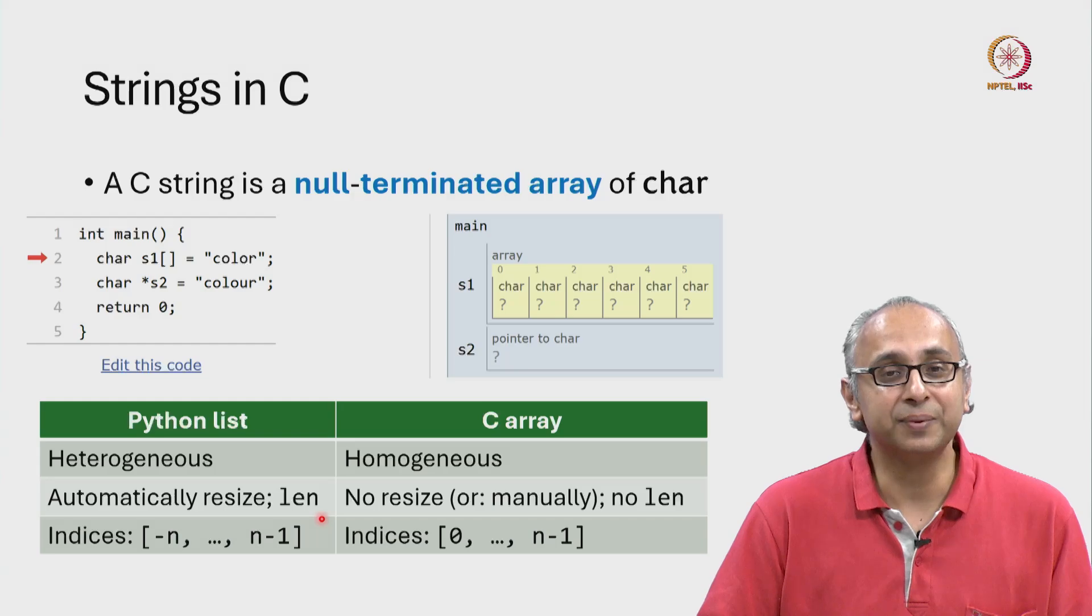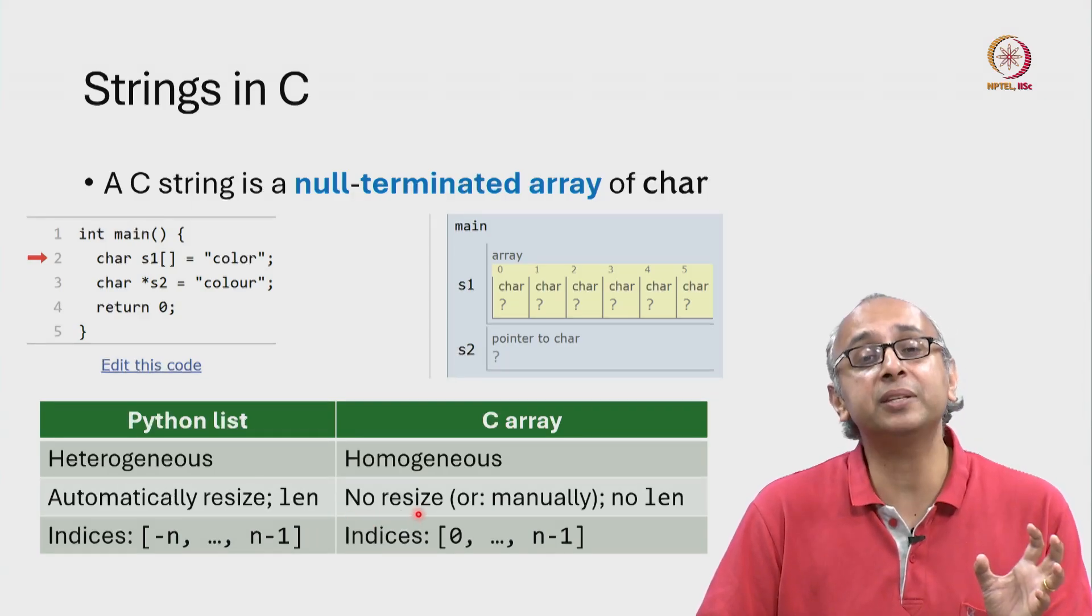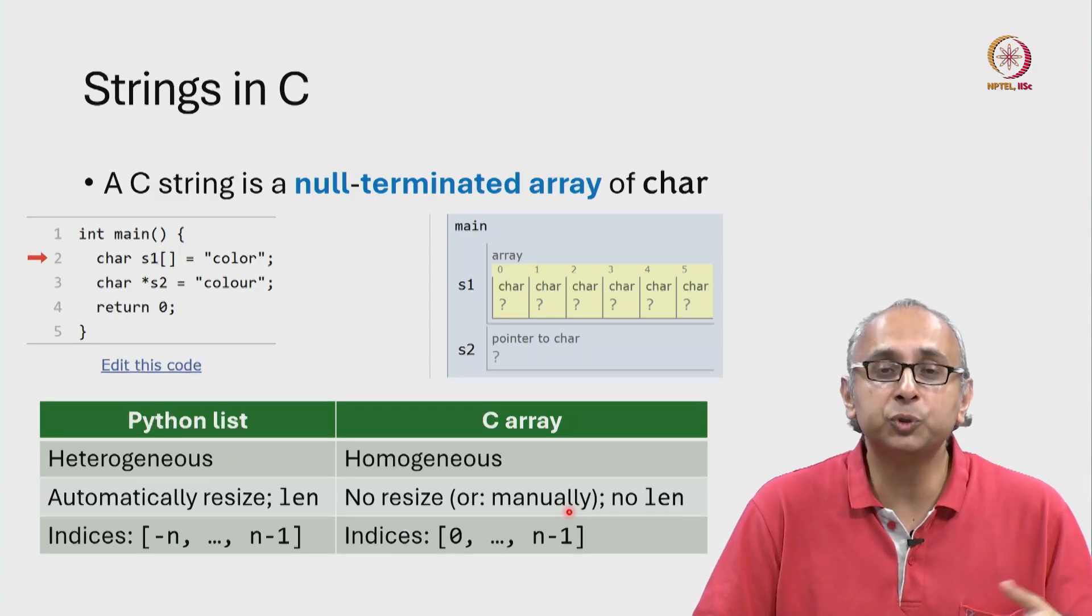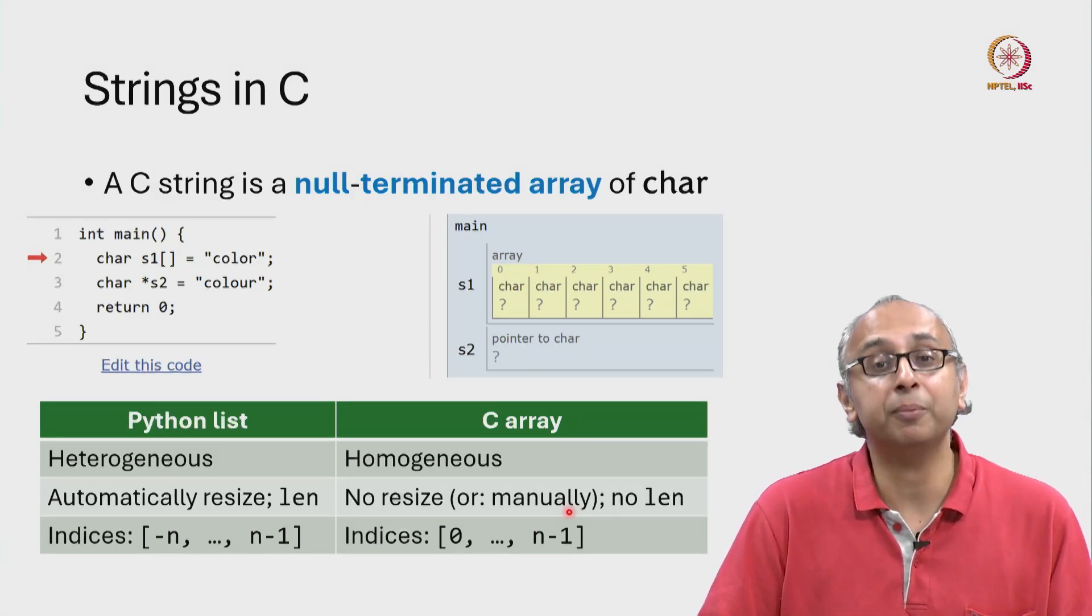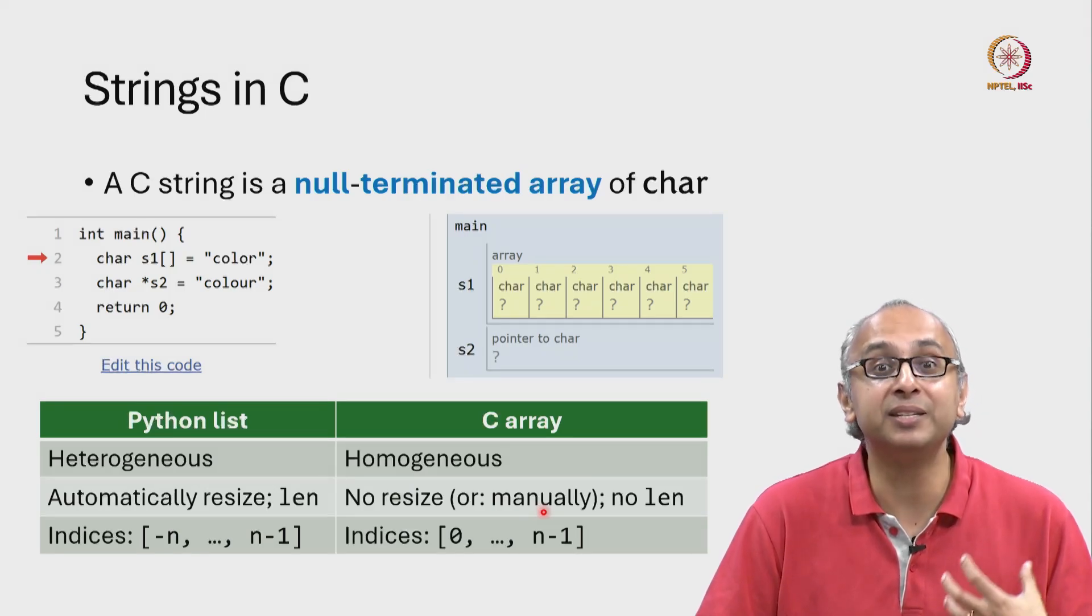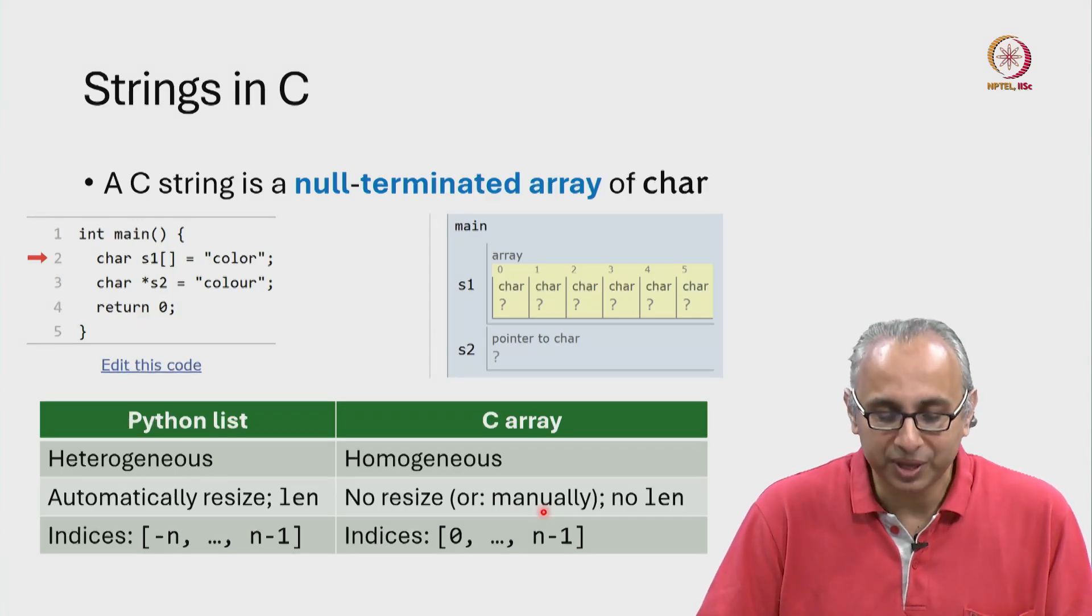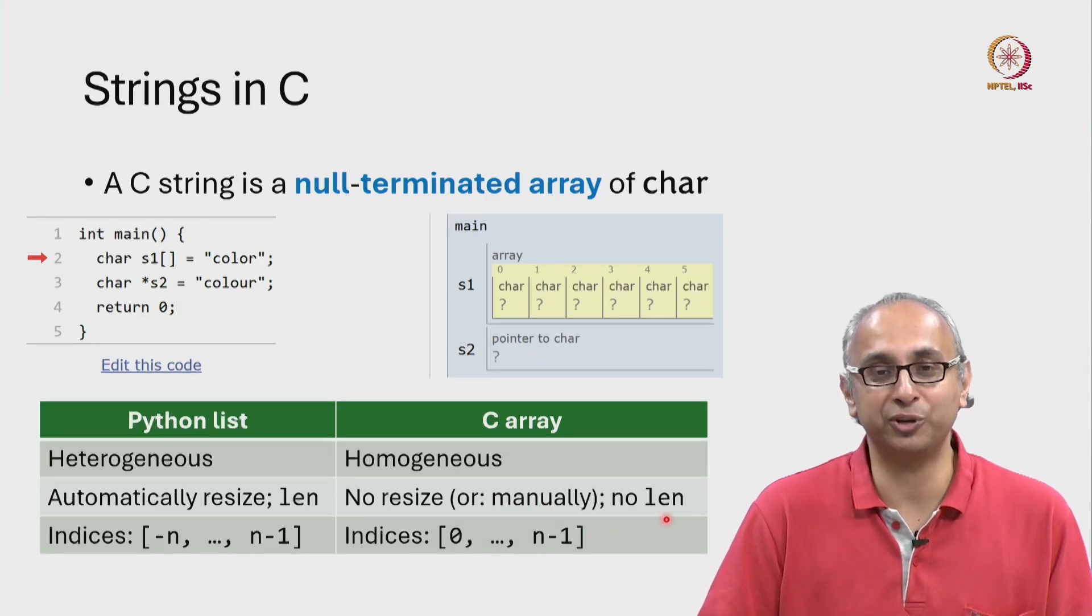In contrast, a C array either cannot be resized or when it can be resized, we have to do a large number of manual steps and we will actually do this when we try and demystify how Python lists actually work. Furthermore, there is no len function available in C.